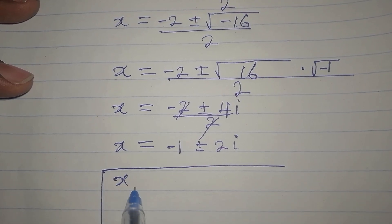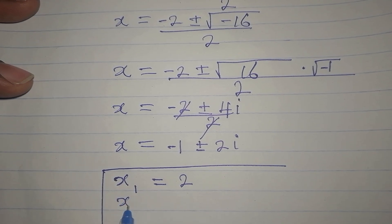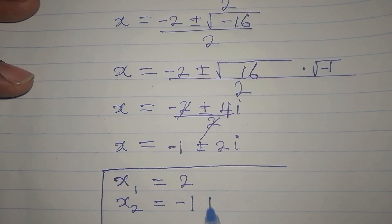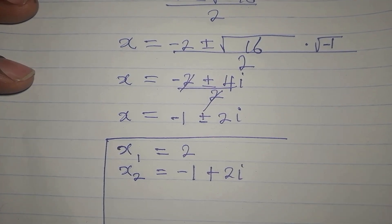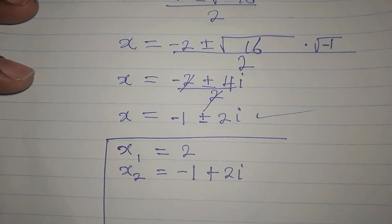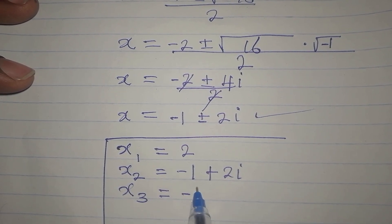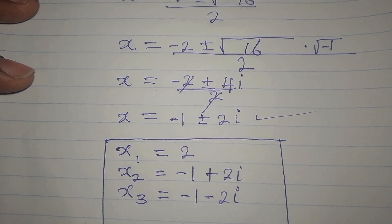So we got x₁ = 2. The second value, x₂, is -1 + 2i. The third value, x₃, is -1 - 2i. These are the three solutions.